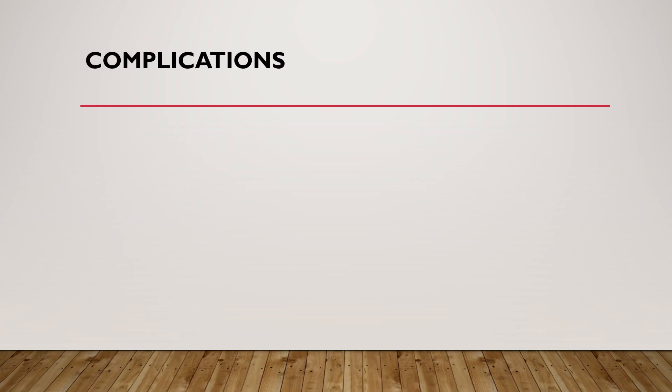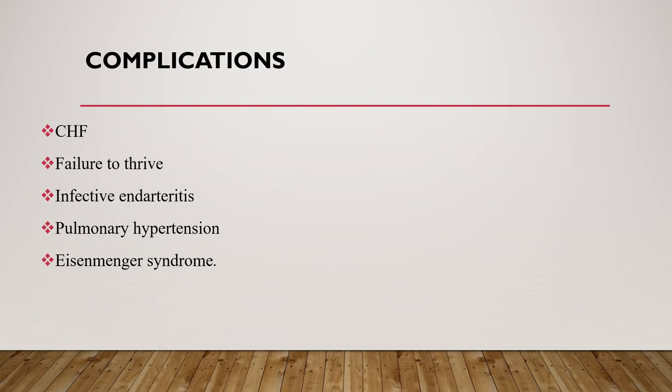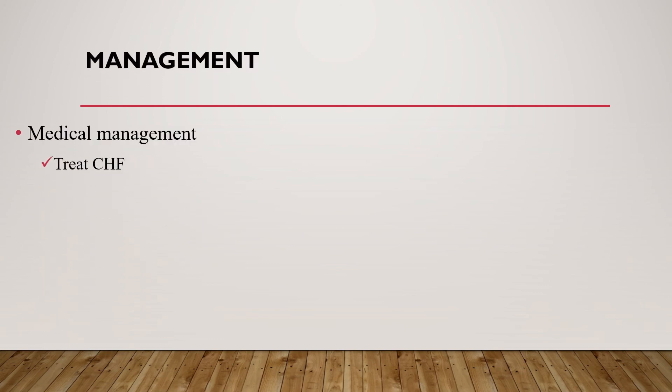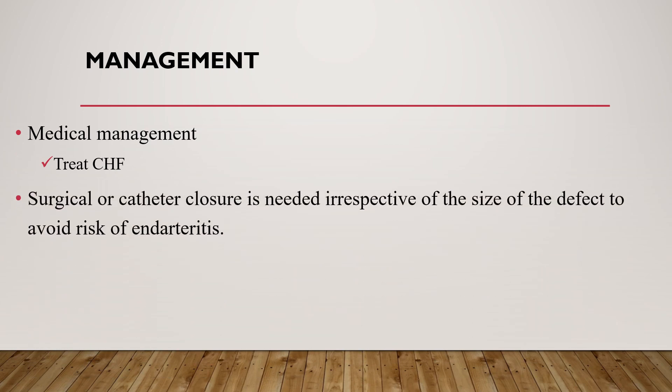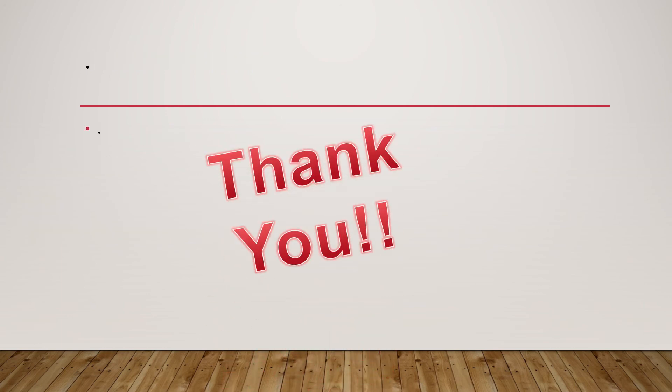Complications of PDA include CHF, failure to thrive, infective endocarditis, pulmonary hypertension, and Eisenmenger syndrome with a right-to-left shunt. Regarding management, medical management is to treat heart failure from PDA; otherwise, surgical or catheter closure is needed irrespective of the size of the defect to avoid the risk of endarteritis. Thank you for your attention. In part three of this lesson, we will talk about obstructive lesions and cyanotic heart disease.